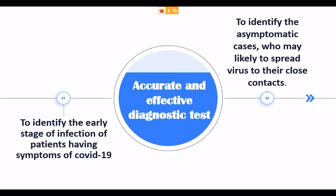Why do we need an accurate and effective diagnostic test? Number one, to identify the early stage of infection in patients having symptoms of COVID-19. The patients may come with different types of symptoms related to COVID-19, so it becomes very important to identify whether the person is really having COVID-19 or not. Your test should be very accurate and effective.